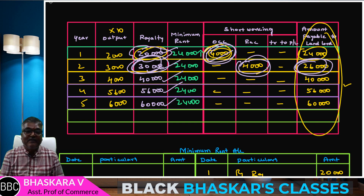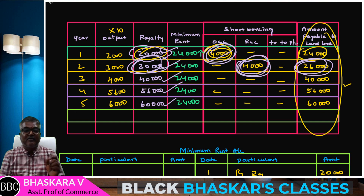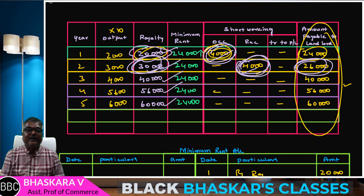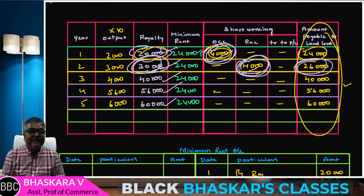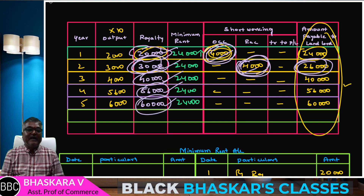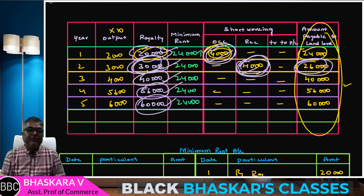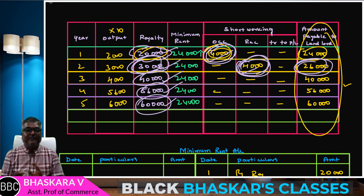30 hours short working recovery, 2 short working account, 4 hours, 30 students. Then, 2 landlord account — same.